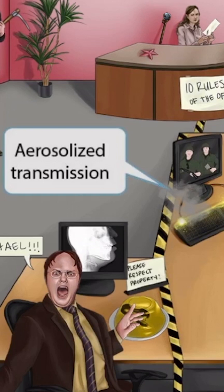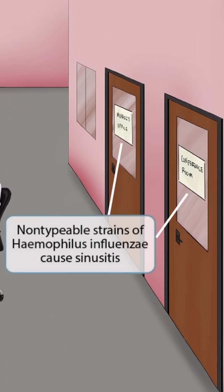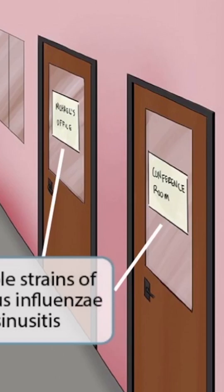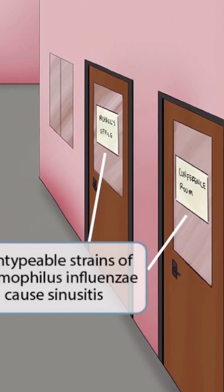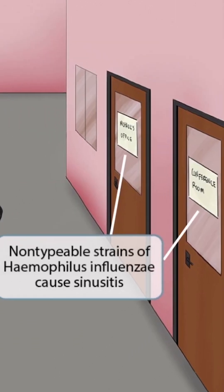Let's discuss diseases caused by the non-typable strains of H. flu. Notice that there are a bunch of signs on the wall behind James — one of the signs says 'conference room' and the other says 'Michael's office.' Signs sounds like sinusitis, so all of these signs are here to help you remember that H. flu causes sinusitis. More specifically, non-typable strains of H. flu cause sinusitis because this is on the right side of the image.